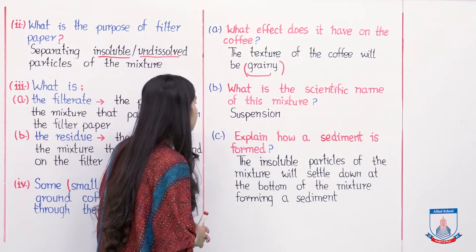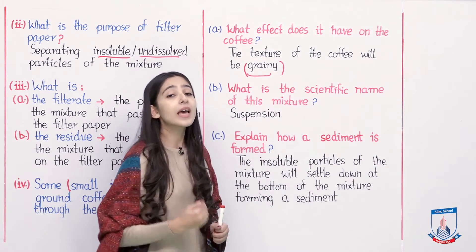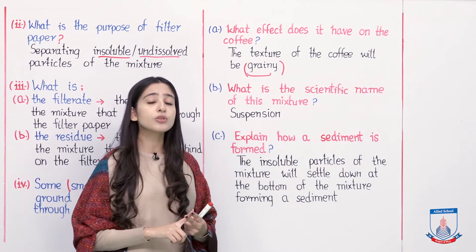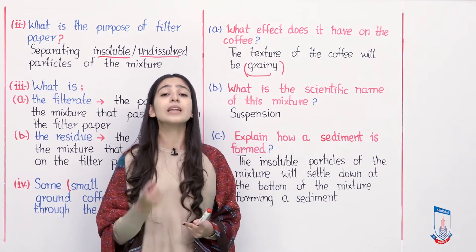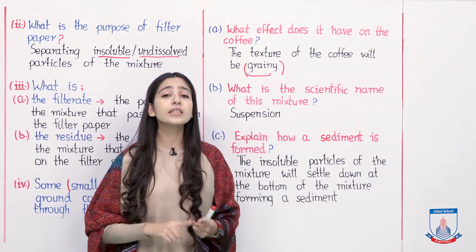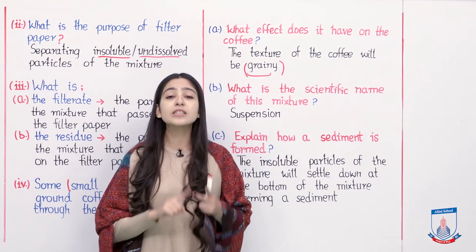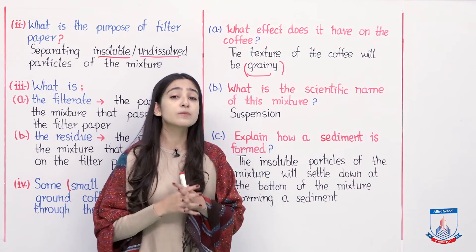Moving towards part B: what is the scientific name of this mixture? I have told you that we have two types of mixture. One in which solid particles are dissolved with liquid is called solution. The other mixture in which solid particles do not dissolve with our liquid is called suspension.